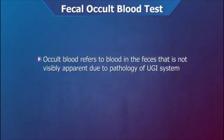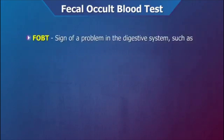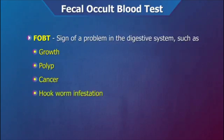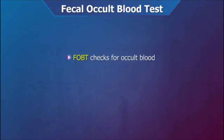Fecal occult blood refers to blood in the feces that is not visibly apparent. Fecal occult blood can be a sign of a problem in the digestive system such as a growth or polyp, cancer, or hookworm infestation in the colon or rectum. A fecal occult blood test checks for hidden or occult blood in the stool.